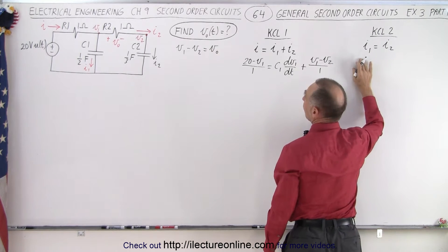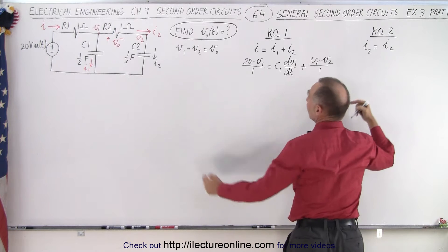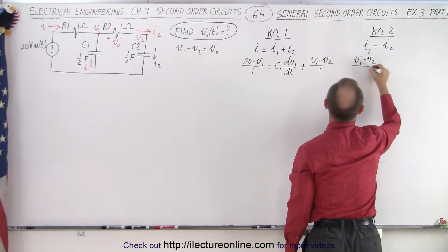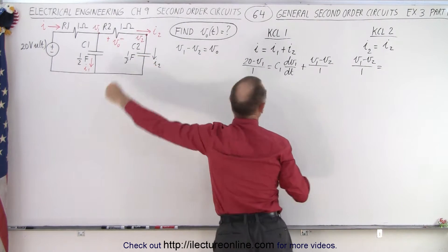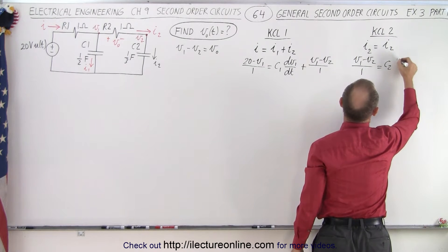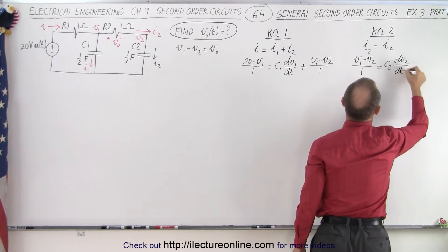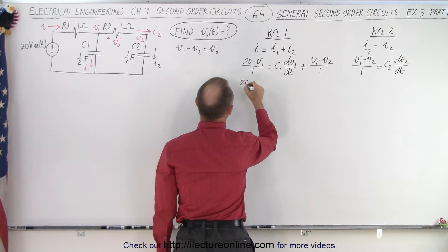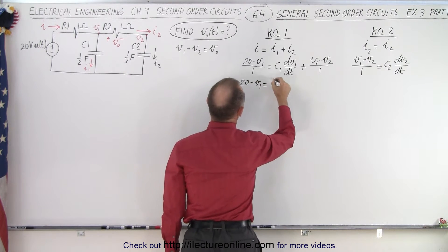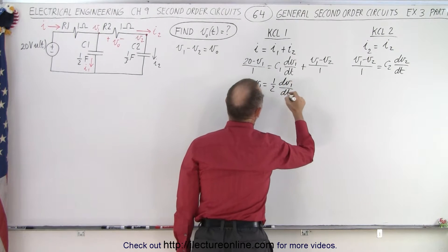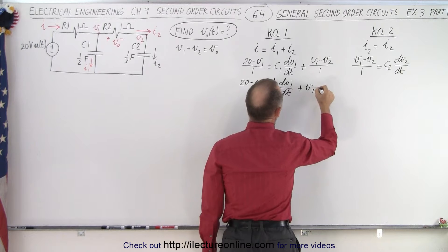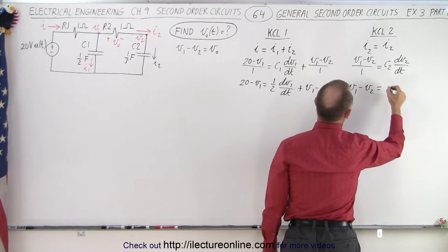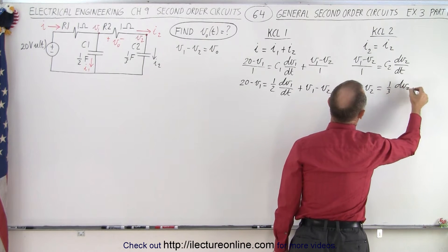Our second equation: notice this is I2 because it's I2 going in and I2 leaving. So here we again have V1 minus V2 divided by the resistor equals the current going through the capacitor, which is C2 times dV2/dt. Cleaning up those equations: 20 minus V1 equals one-half times dV1/dt plus V1 minus V2. And V1 minus V2 equals one-third times dV2/dt.